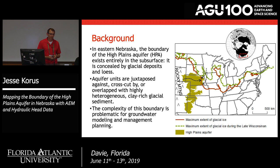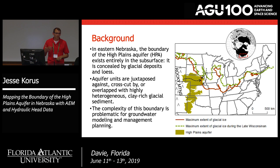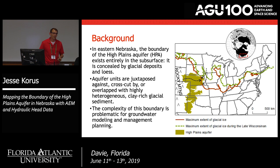The problem is that in eastern Nebraska, the High Plains aquifer, unlike just about everywhere else in the High Plains, is concealed beneath quite a lot of Quaternary glacial sediment, as well as a thin blanket of loess. So the High Plains aquifer units are juxtaposed to very heterogeneous sediments. This creates a problem for groundwater management as well as modeling: where are these boundaries, what are the boundary conditions, how do we model them, how do we draw zones around our management areas, and what do we do in each of those zones to better manage the water?